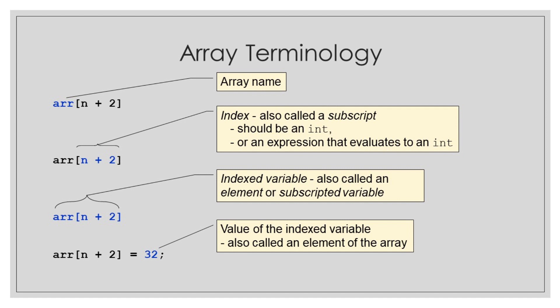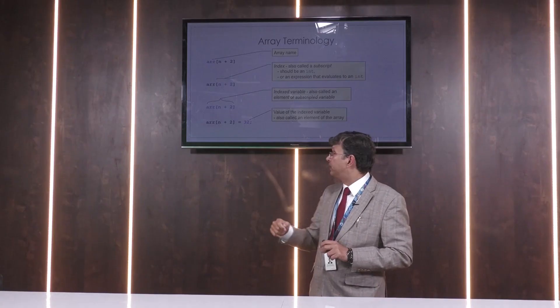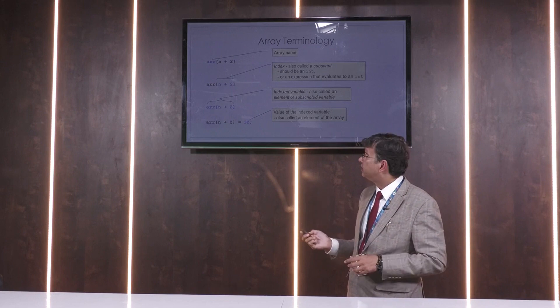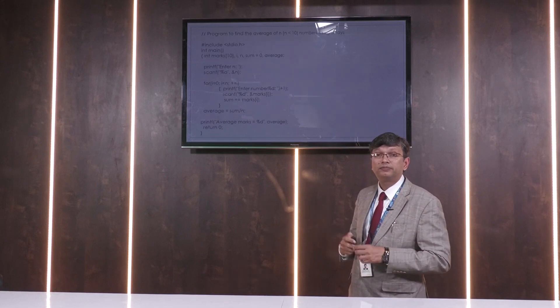We have the array name and the index combination, that is ARR n plus 2, and together this is the element or the subscripted variable. And lastly we can assign the value to the element. Like in our case we are assigning 32 to the value ARR n plus 2. So these all concepts will be using in arrays.